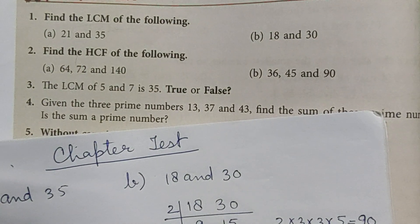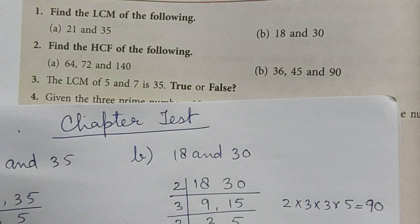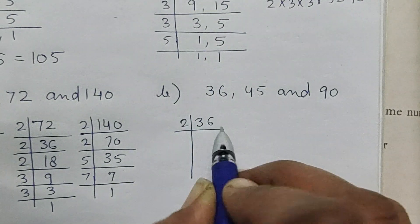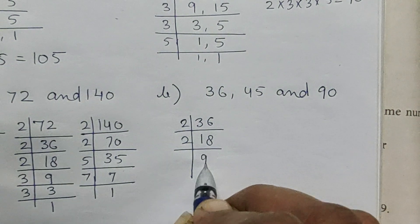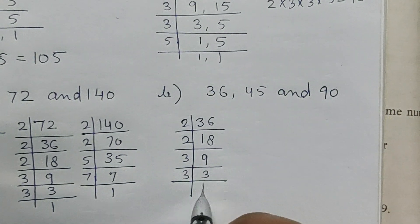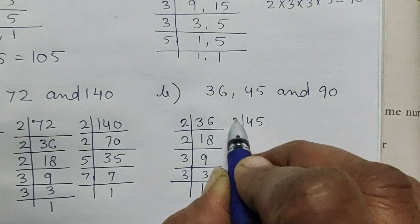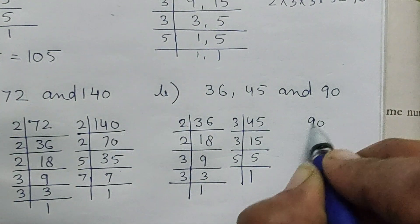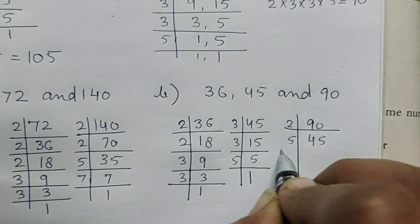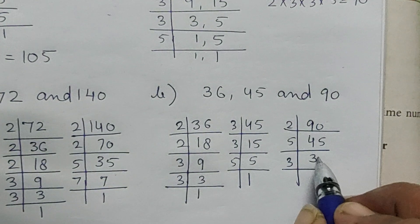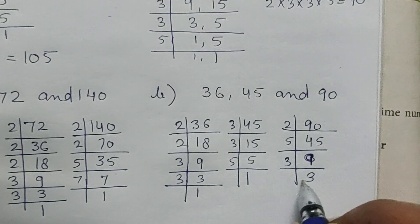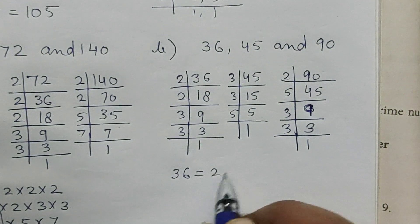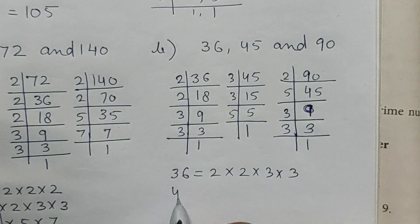Now part B: find HCF of 36, 45, and 90. Factors of 36: 18, 9, 3, 3, 1. Factors of 45: 3, 15, 3, 5, 1. Factors of 90: 45, then 5, 9, 3, 1. So 36 = 2 × 2 × 3 × 3.